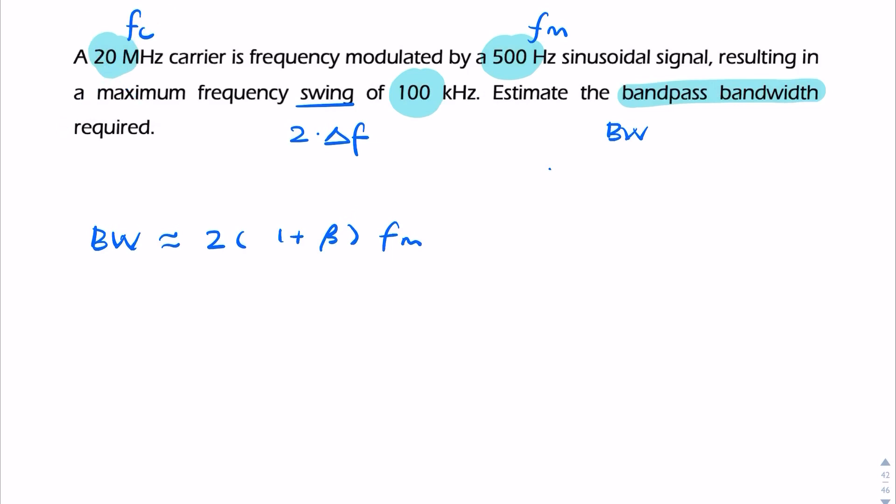So we would need to find beta. Beta, by definition, is delta f over fm. So that's 100 kilohertz. No, 100 kilohertz is the swing. So the actual frequency deviation is 50 kilohertz, divided by 500, which is my message frequency. That gives me 100.